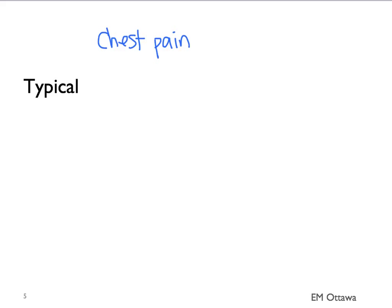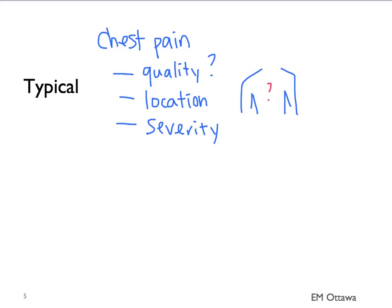Let's go through the different parts of the presentation. Patients usually present with chest pain. You want to find out everything about this pain. What is its quality? Is it stabbing, sharp, pressure, or crushing? Where is the pain — have the patient point to where the pain is mostly felt. Severity of the pain: ask the patient to rate the pain on a scale of 1 to 10. What was the onset of the pain — both the time of onset and what the patient was doing?